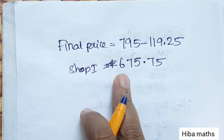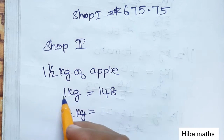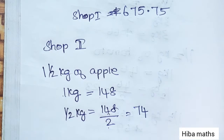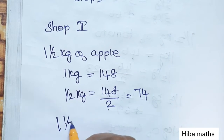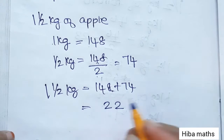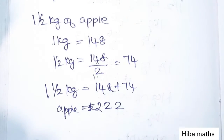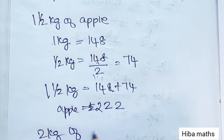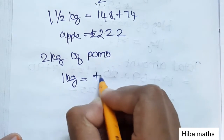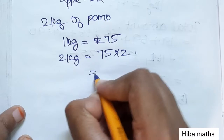Shop 1 price is 675.75. Now for shop 2, the first item is 1.5 kg of apple. 1 kg is 148 rupees, half kg is 74 rupees, so 1.5 kg is 148 plus 74 which equals 222 rupees. After that, 2 kg of pomegranate — 1 kg is 75 rupees, so 2 kg is 75 into 2, which equals 150 rupees.